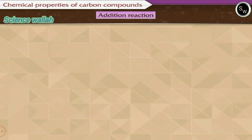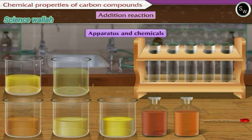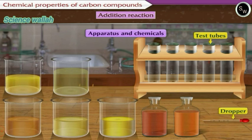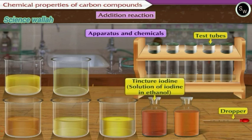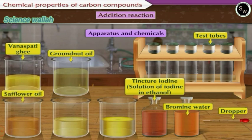Addition reaction: to understand the addition reaction, let us perform an activity. The apparatus required includes test tubes and dropper. The chemicals required are tincture iodine (that is, solution of iodine in ethanol), bromine water, liquefied vanaspati ghee, and various vegetable oils like groundnut oil, safflower oil, sunflower oil, and olive oil.